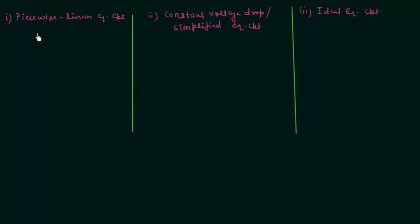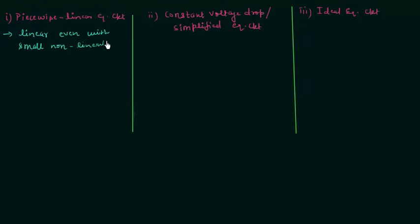There is only one assumption in the piecewise linear model: we will assume the curve to be linear even with small non-linearity. This is the only assumption in the piecewise linear model. First I will plot the curve and then we will draw the equivalent circuit.